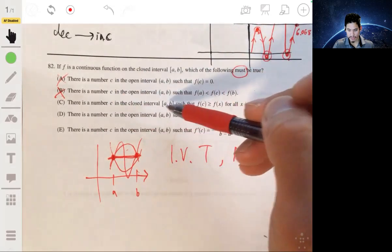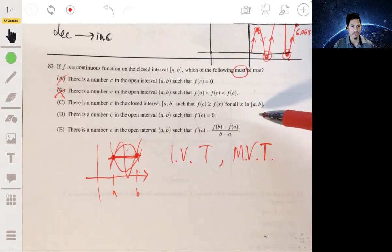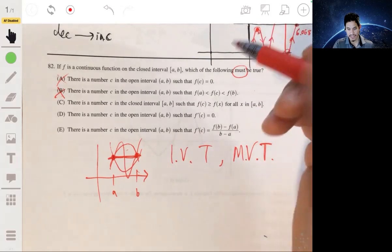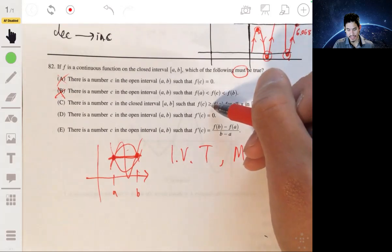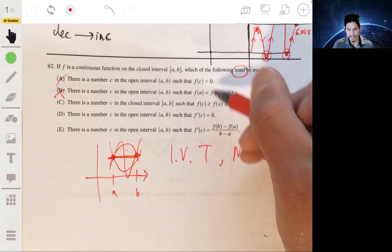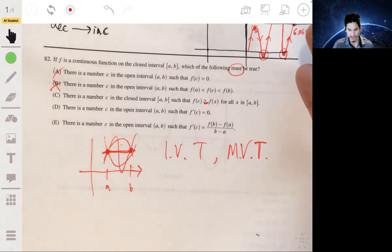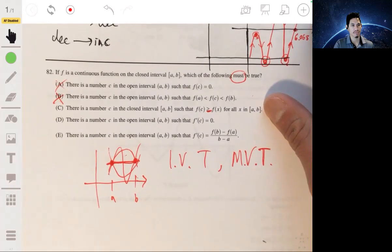C, there's a number in the closed interval such that F of C is greater than or equal to F of X for all X in this closed interval. Now, this is a thing. It says greater than or equal to. I mean, this, yeah, like it could, and that's possible. But the thing is, it says or equal to. So the fact that it says or equal to, makes that, yeah, that has to be true. I'm not really even sure what they're trying to get at. So that's really it. I mean, this is going to be our answer.